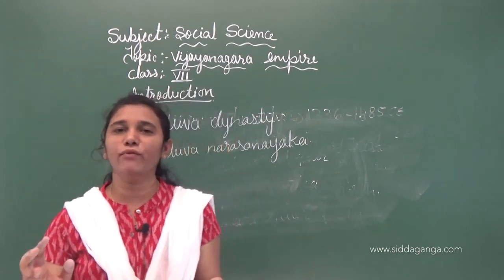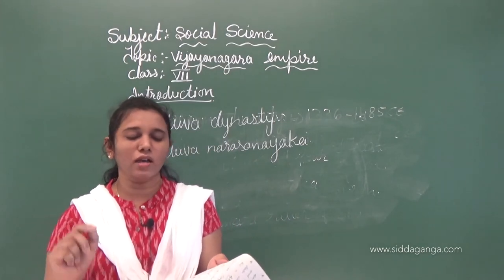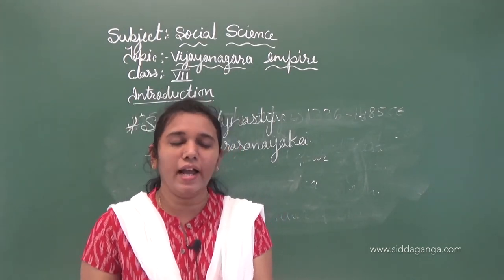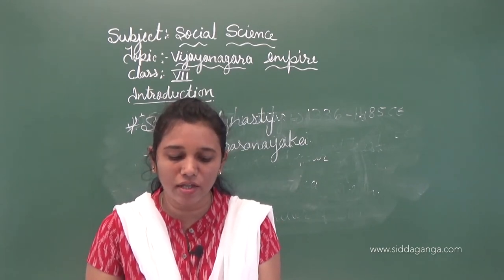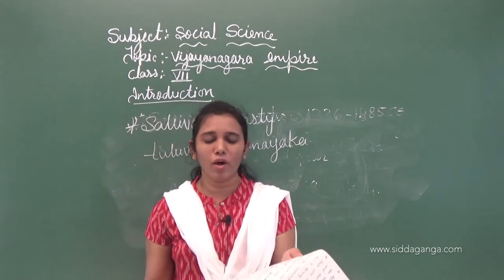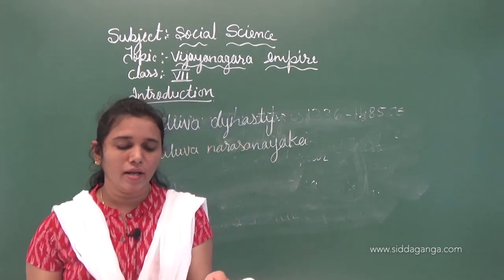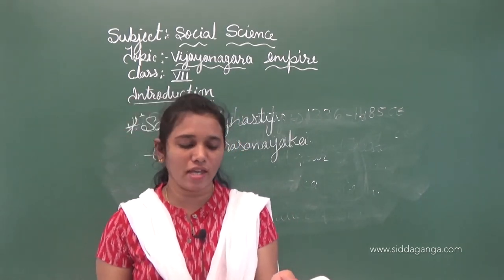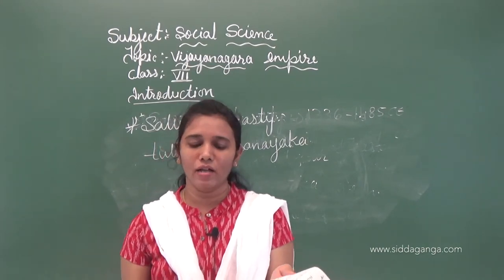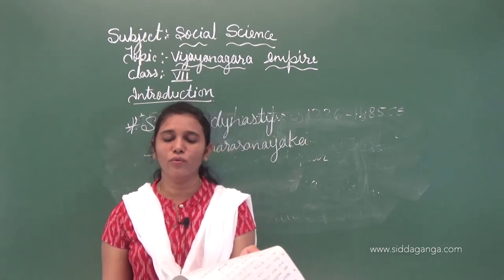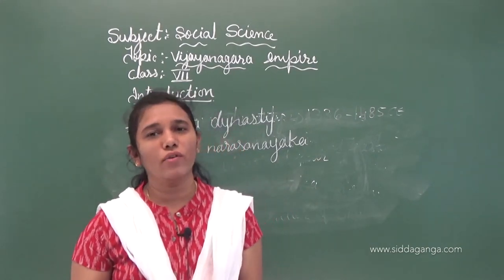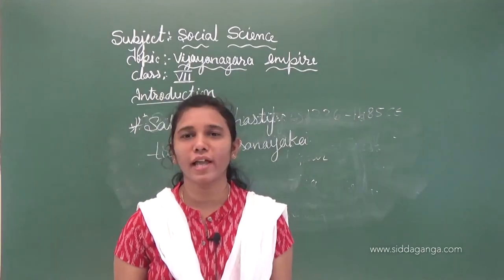Because of this, the kingdom was under the protection of a commander called Tuluwa Narasanaika from 1491 to 1503. The Saluva dynasty's rule ended there. Thank you, children.